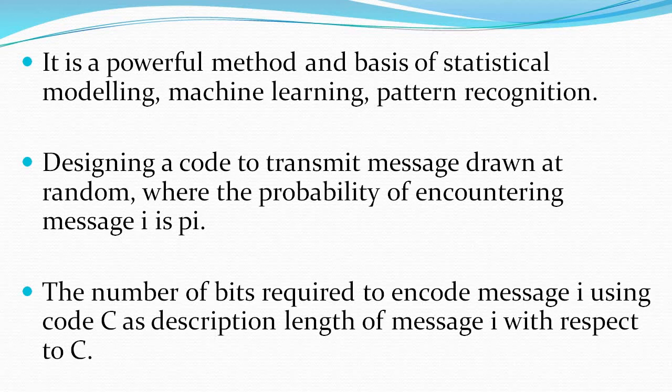To design a code to transmit a message drawn randomly, the probability of encountering that message is P(i). We are considering one message randomly drawn from the distribution and want to transmit it. The message is represented as i, and to transmit it we encode the message using some code C. The description length of message i with respect to code C is the number of bits required to encode that message.